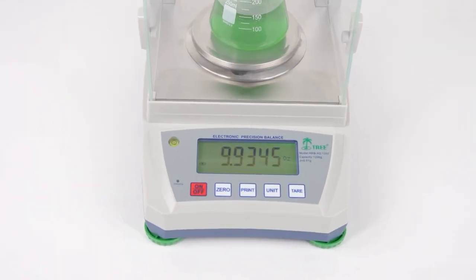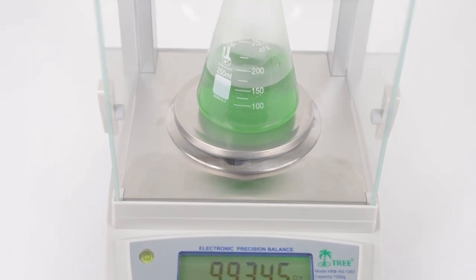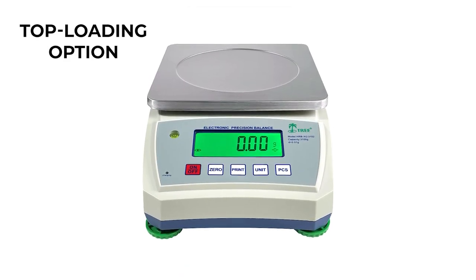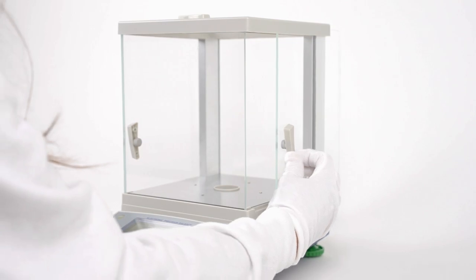The HRB-XG is available in two models, one top-loading option with a broader capacity and one with a removable glass shield.